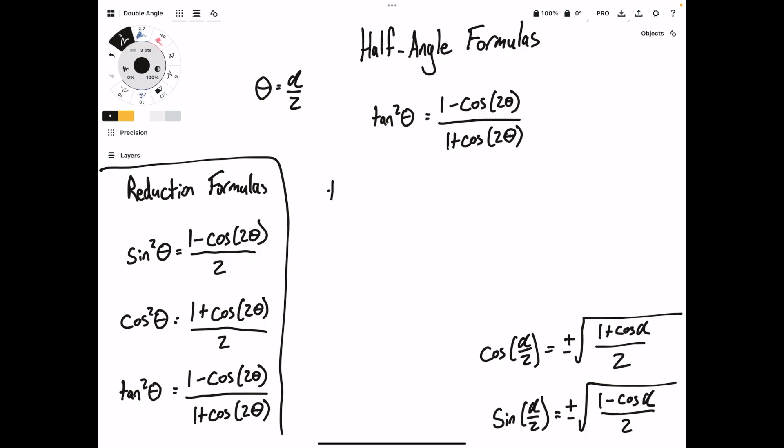So step 1, tan squared of alpha over 2 is equal to 1 minus the cosine of 2 times alpha over 2, all over 1 plus the cosine of 2 times alpha over 2. So 2's on top and bottom both cancel, and the right side turns out to be 1 minus cosine of alpha over 1 plus the cosine of alpha, just like this.